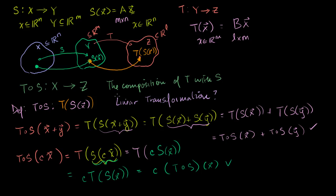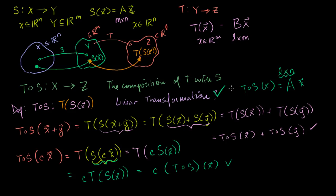So the composition as we've defined it is definitely a linear transformation. That means it can be written as some matrix times our vector x. Since we're going from an n-dimensional space to an l-dimensional space, this matrix will have n columns and l rows — it's an l by n matrix. In the next video, now that we know this is a linear transformation representable as a matrix-vector product, we'll figure out how to express this matrix in terms of the two matrices A and B that define transformations S and T.